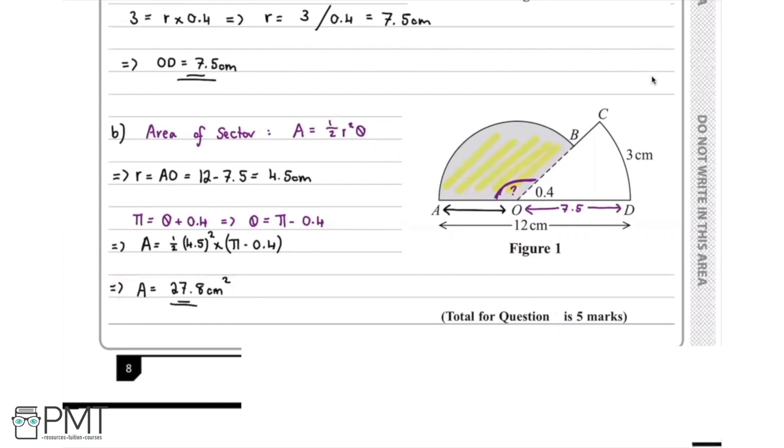Now we'll take a look and see where we picked up our marks in this question. There's three marks on offer. We will pick up our first mark for using the angle AOB being equal to pi minus 0.4, and then we pick up our second mark for using the formula area equals half r squared theta and subbing our values in. Then we receive our third and final mark for the correct answer.